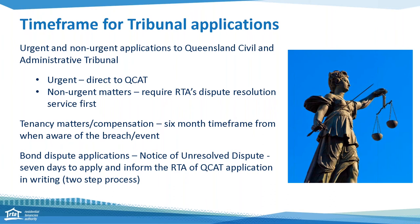Finally, a reminder on timeframes for applying to the Queensland Civil and Administrative Tribunal. The Act outlines urgent and non-urgent applications. Urgent applications — such as a termination order, warrant of possession, hardship, or objectionable behaviour — go straight to QCAT. For non-urgent matters such as compensation or bond matters, you need to apply to the RTA's free dispute resolution service first. If not resolved through conciliation, you'll be issued a notice of unresolved dispute to proceed to QCAT. For non-urgent tenancy matters or compensation, you have a six-month timeframe from when you're aware of the breach or event, and that means applying to the RTA's dispute process first before applying to QCAT.